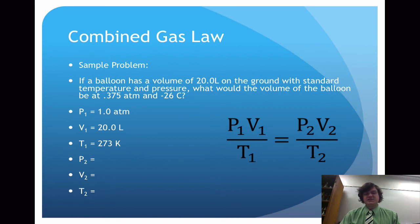So pressure 2 is listed as 0.375 atmospheres. Volume 2 is what the question is asking us to calculate, and negative 26 degrees Celsius is the temperature. However, we need to use Kelvin for temperature in the gas law problems. So we will take negative 26, add 273 to get a value of 247 Kelvin.